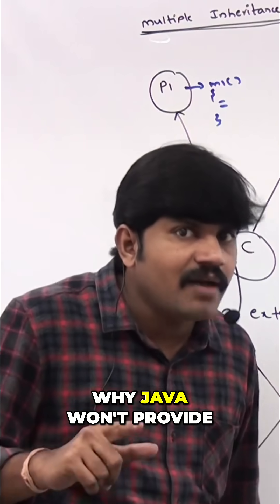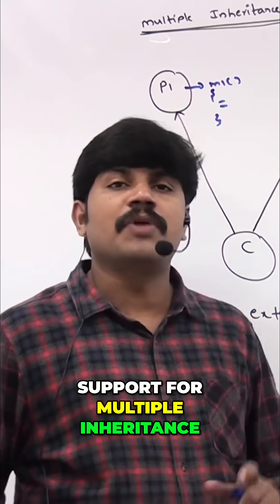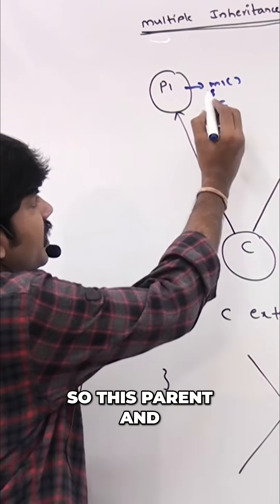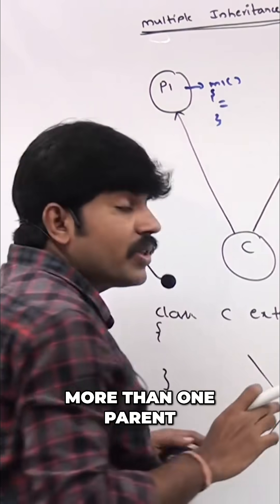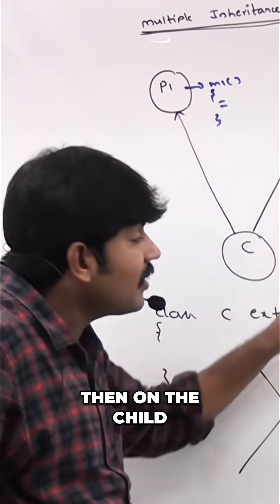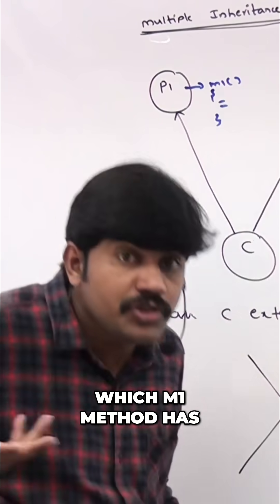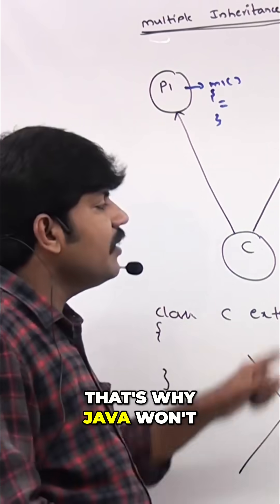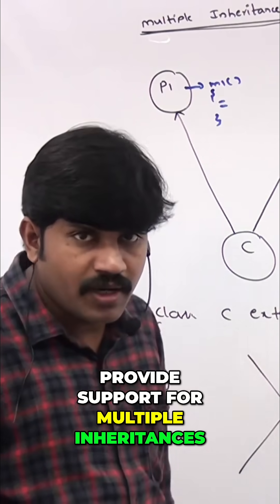Why Java won't provide support for multiple inheritance - this is the reason. If both parent classes contain the same method, then on the child, if I'm calling that method, which method has to come? There is no way to resolve. That's why Java won't provide support for multiple inheritance.